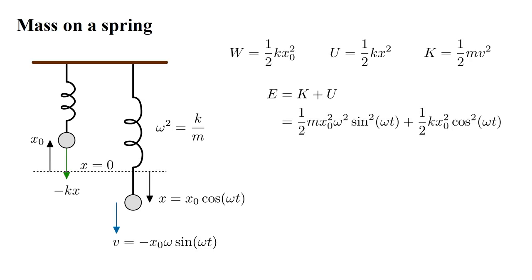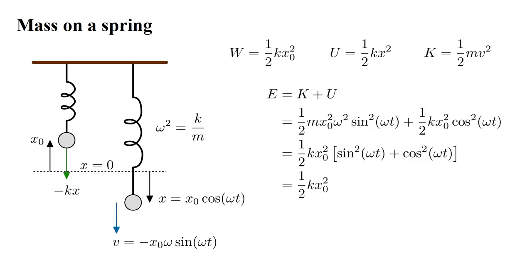Plugging in the expressions for v and x, this becomes one-half m x₀² omega² sine²(omega t) plus one-half k x₀² cosine²(omega t). Plugging in omega squared equals k over m and factoring, we end up with e equals one-half k x₀² times the quantity (sine² + cosine²) of omega t. The sine squared plus cosine squared of any number is one.